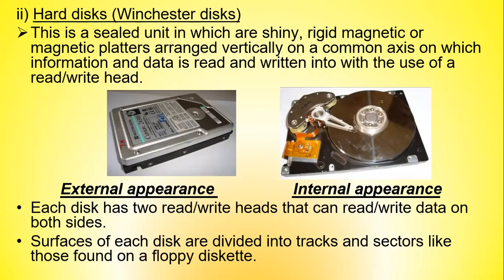Hard disks, also called Winchester disks, are found in sealed units containing shiny rigid magnetic platters arranged vertically on a common axis, on which data is read and written using a read-write head. The hard disk drive contains two read-write heads per platter that can read or write data on both sides; if a hard disk drive contains several platters, there are corresponding multiples of two read-write heads. The surfaces of each disk are divided into tracks and sectors like those found in a floppy disk.